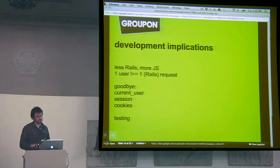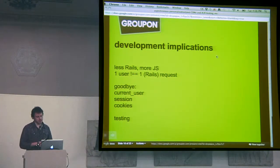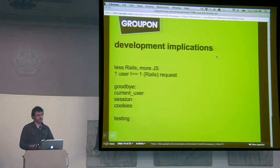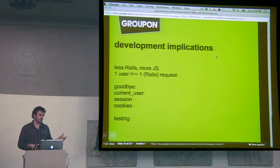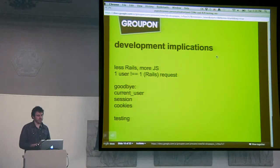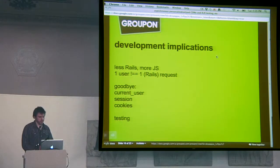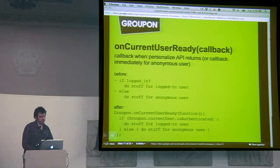There are also significant issues we ran into with testing. We use Cucumber, but if you write your tests with the standard current user, session, etc., that's not necessarily going to work, and you'll have to start using JavaScript in your tests. For example, if you need to test that certain parameters get converted to cookies — which all used to happen in the controller layer — now if you run that test, they're all going to fail because no cookies get set. That's actually what I've been dealing with lately.